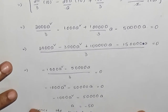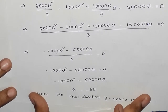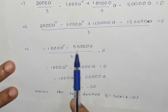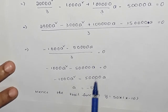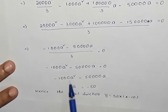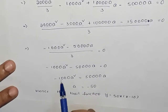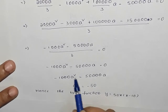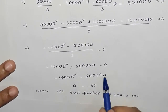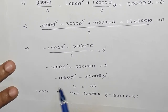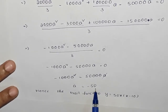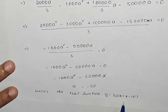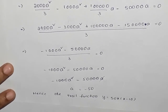Setting the expression equal to 0: −1000a squared − 50,000a = 0. Cancelling common factors and solving, we get a = 50. Therefore the trial function is y = 50·x·(x − 10).